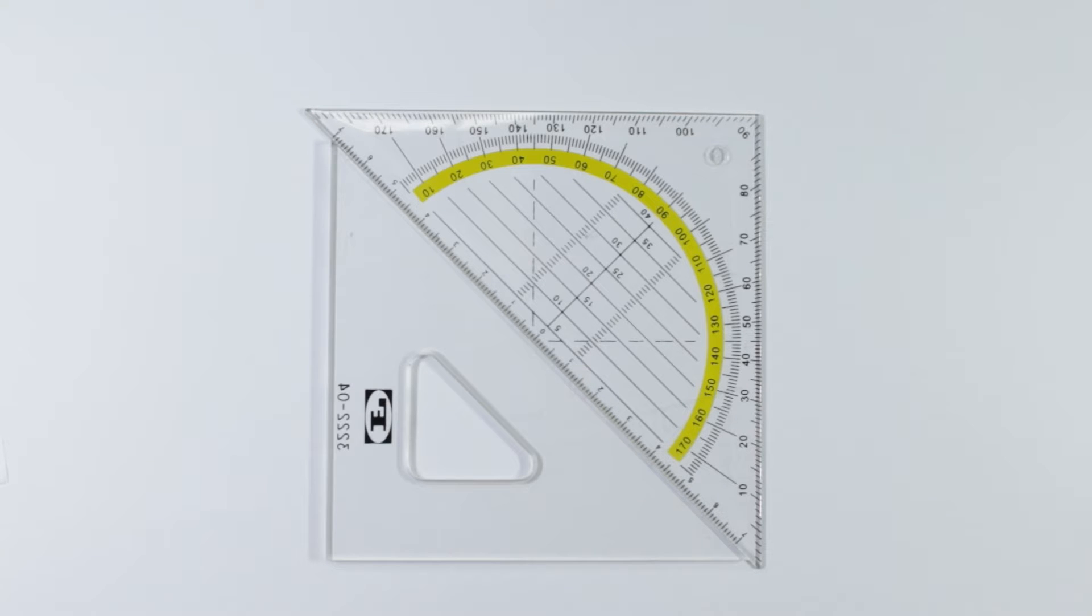In lesson 1 we covered horizontal lines, vertical lines and 90 degree angles. 45 degree angles are also very important. We need them to be able to construct certain gems for example.